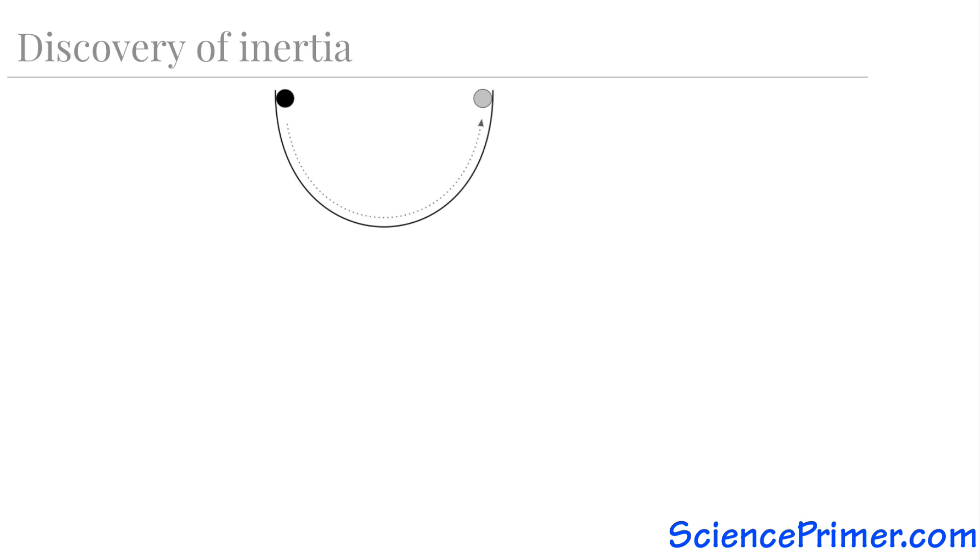As it moves up the other side, gravity's pull will slow it down until it stops. What Galileo realized is that with no other forces other than gravity acting on the ball, it will stop on the other side of the bowl at exactly the same height where it started. At that point, gravity's continued pull will cause it to roll back down, starting the cycle again. In a perfectly frictionless world, the ball will continue to roll back and forth forever, reaching the same height each time.